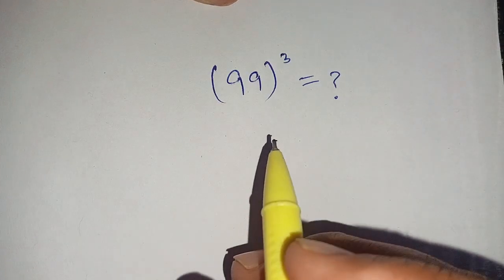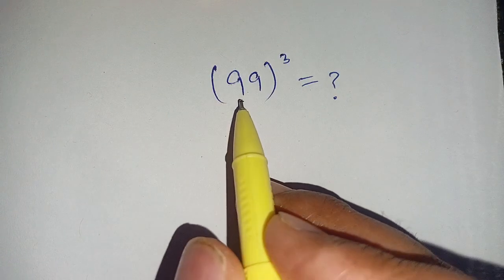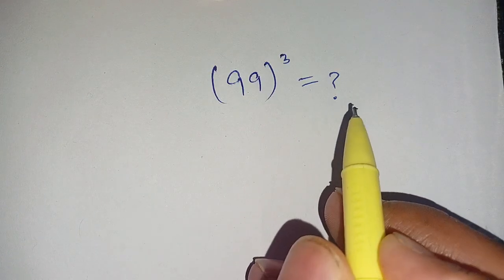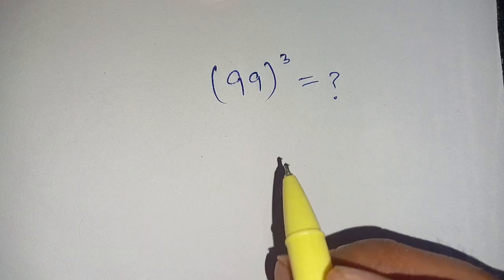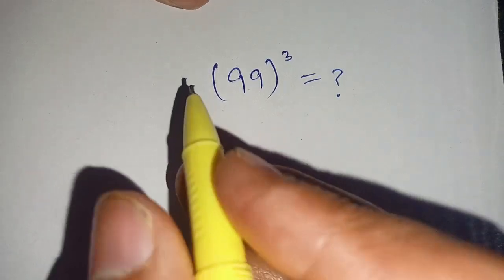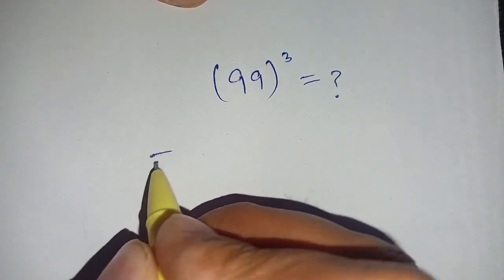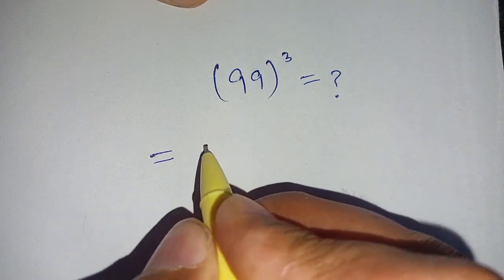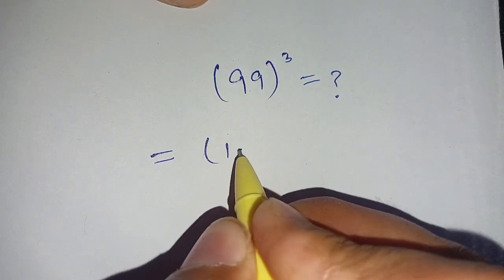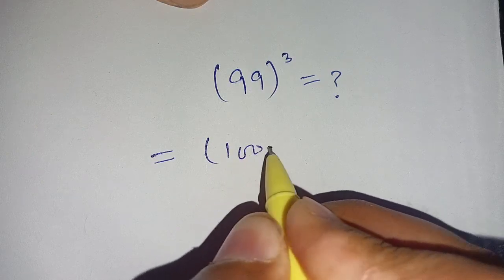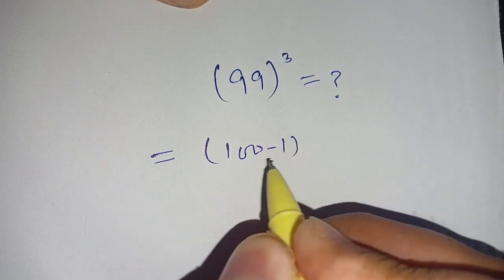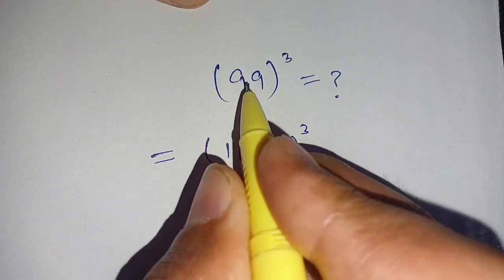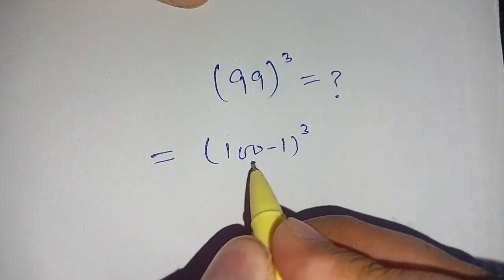Hello everyone. In today's video we are going to solve 99 cubed without using any calculator. We can write 99 as 100 minus 1, so 99 cubed becomes (100 minus 1) cubed.